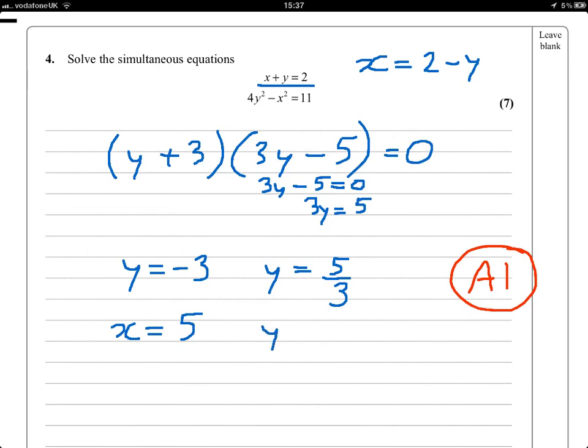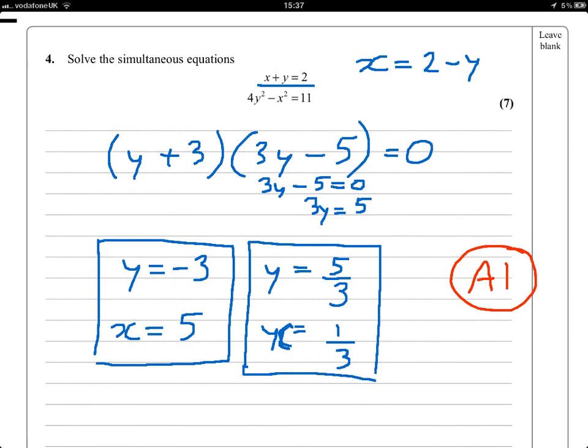A little bit trickier, 2 minus 5 thirds, well, 5 thirds is 1 and 2 thirds. So 2 minus 1 is 1, and the other 2 thirds leaves me with 1 third. And that's x, not y. These are paired solutions, by the way. When y is equal to minus 3, x is equal to 5. When y is equal to 5 thirds, x is equal to 1 third.